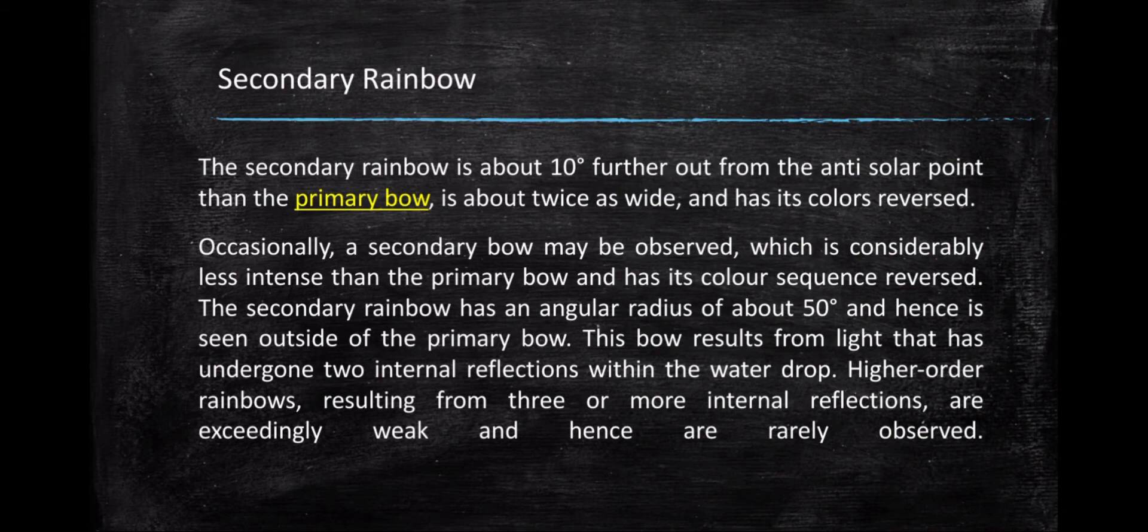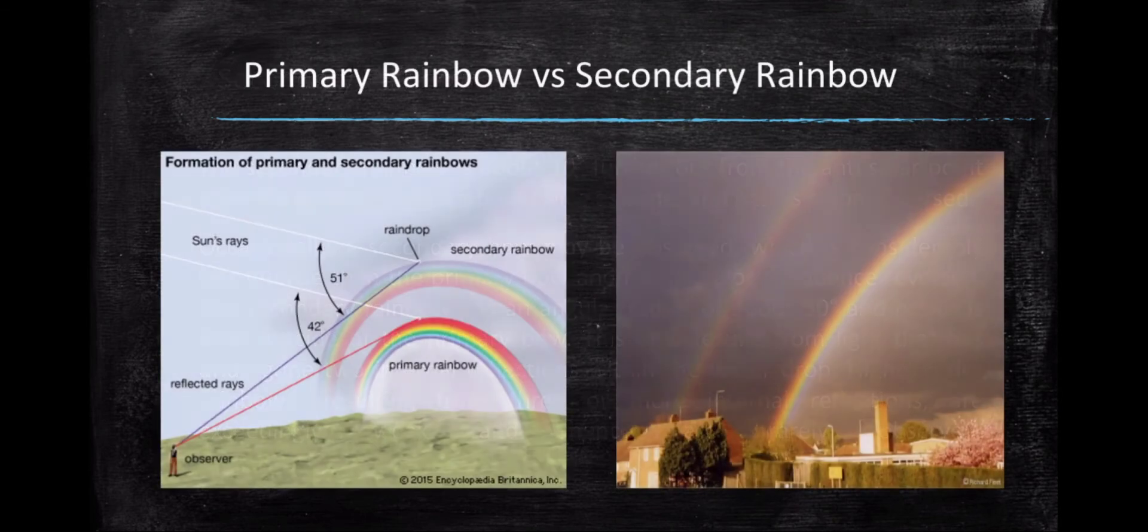Occasionally, a secondary bow may be observed which is considerably less intense than the primary bow and has its color sequence reversed. The secondary rainbow has an angular radius of about 50 degrees and hence it is seen outside of the primary bow. This bow results from the light that has undergone two internal reflections within the water drop. Higher-order rainbows resulting from three or more internal reflections are exceedingly weak and hence are rarely observed.